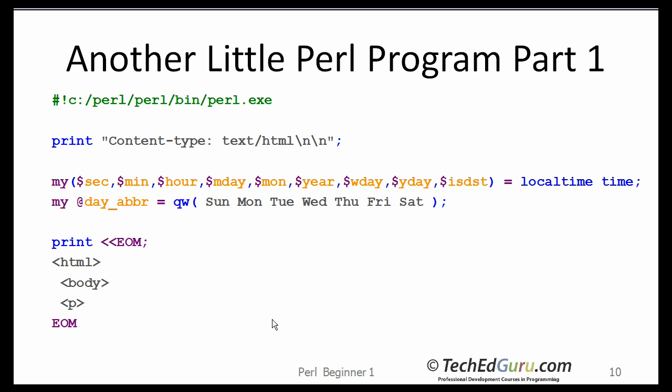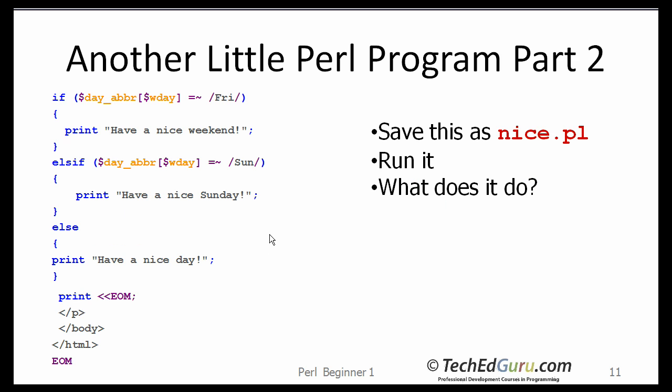Then here is a second example. It runs into several lines, a little longer, runs into two slides. I suggest you copy all of that code, save it as nice.pl, and run it. Just see what it does and go back and try analyzing the code. Once you get the output, you will be able to very quickly figure out what it is doing.